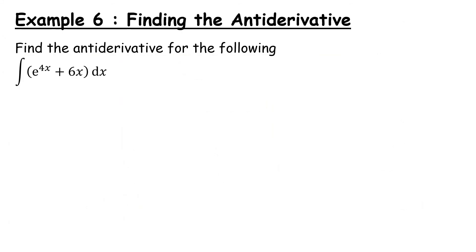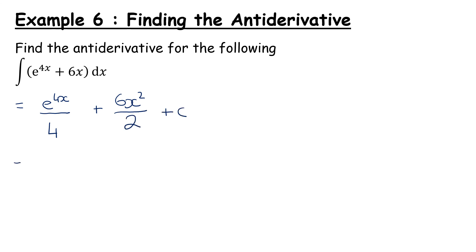Anti-derivative is another word for the result of integration. For an indefinite example: integrating e to the power of 4x gives e to the power of 4x divided by 4 — we divide by the derivative of the power, which is 4. Integrating 6x: add 1 to the power to get 6x squared, divide by the power 2, giving 3x squared. Tidying up: e to the power of 4x over 4 plus 3x squared plus c.